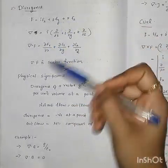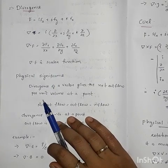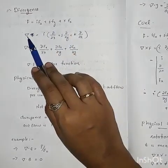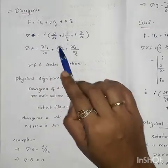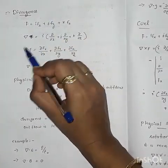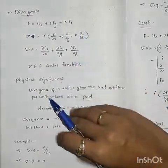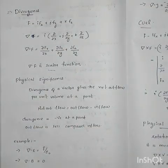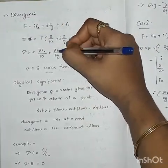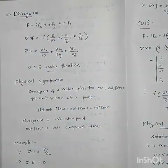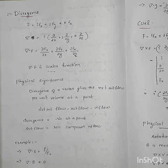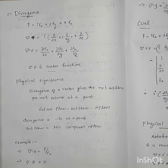Now I will add divergence. Divergence uses the same del operator. Del dot F gives a scalar result.